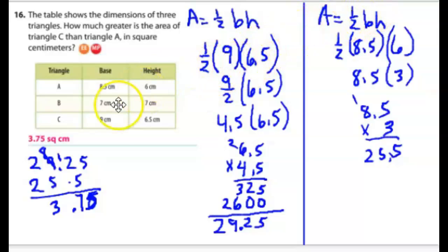So I did C first. So 9 is the base times the height of 6 and five-tenths. I did one-half times 9, which actually we did the previous problem. 9 divided by 2 times 6 and five-tenths. So 4 and five-tenths times 6 and five-tenths. I get 29 and 25 hundredths.